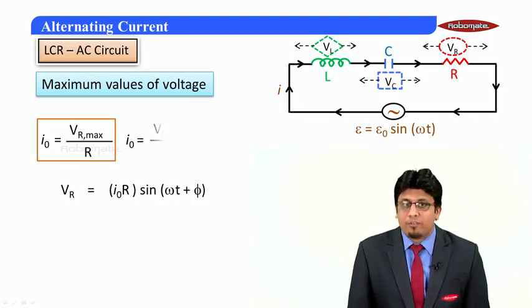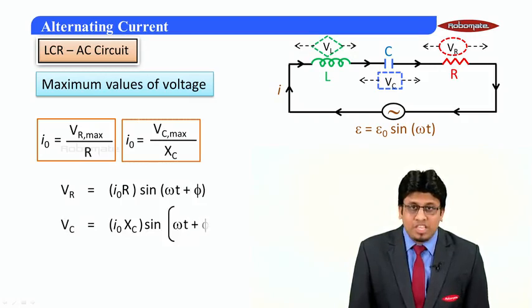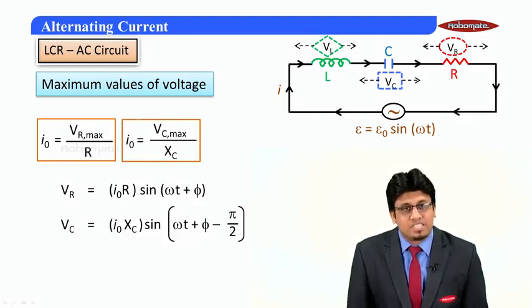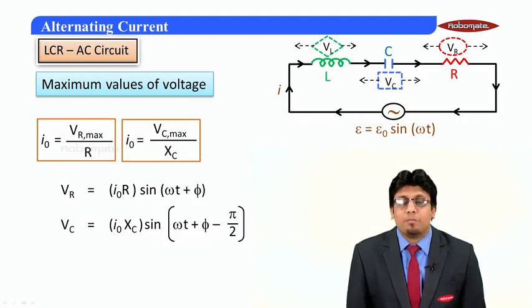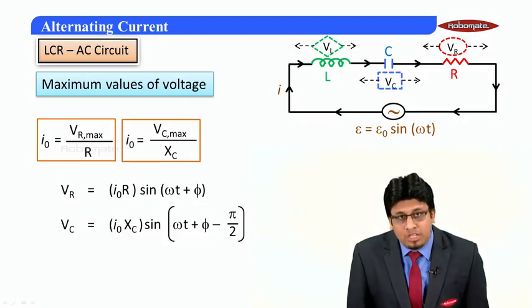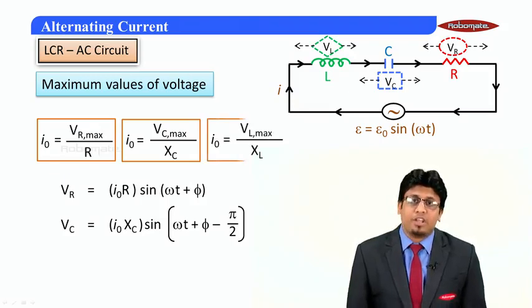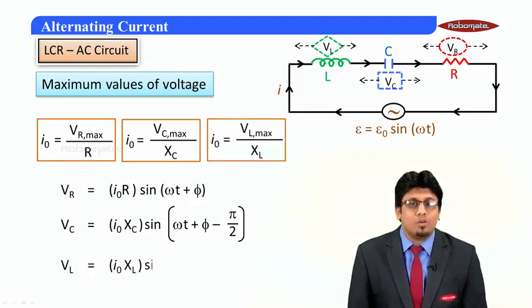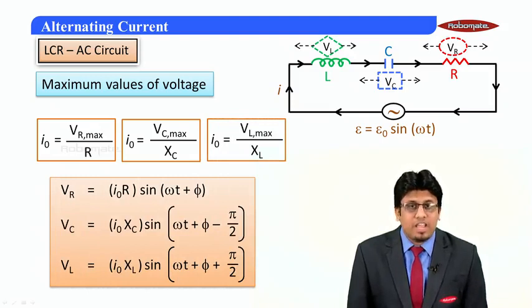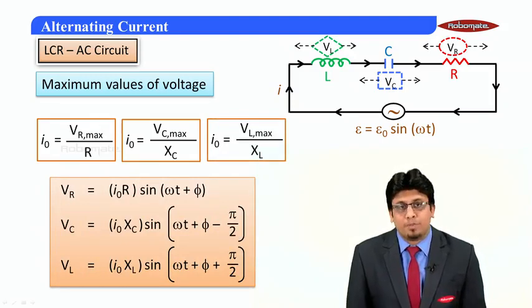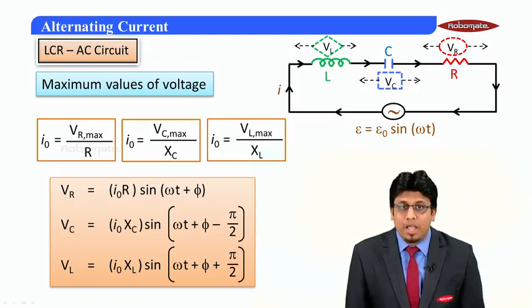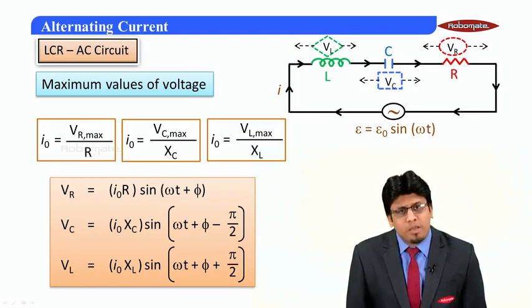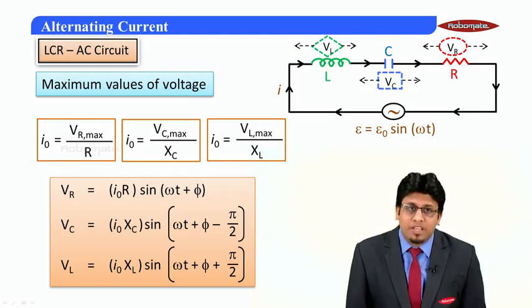So for resistance it is given by V = I₀R sin(ωt + φ). For the value of capacitor we can say that VC = I₀Xc, and the voltage actually lags behind the current by π/2. And in case of an inductor we can write VL would be equal to I₀Xc sin(ωt + φ + π/2). That means that the voltage leads the current by an angle of π/2.